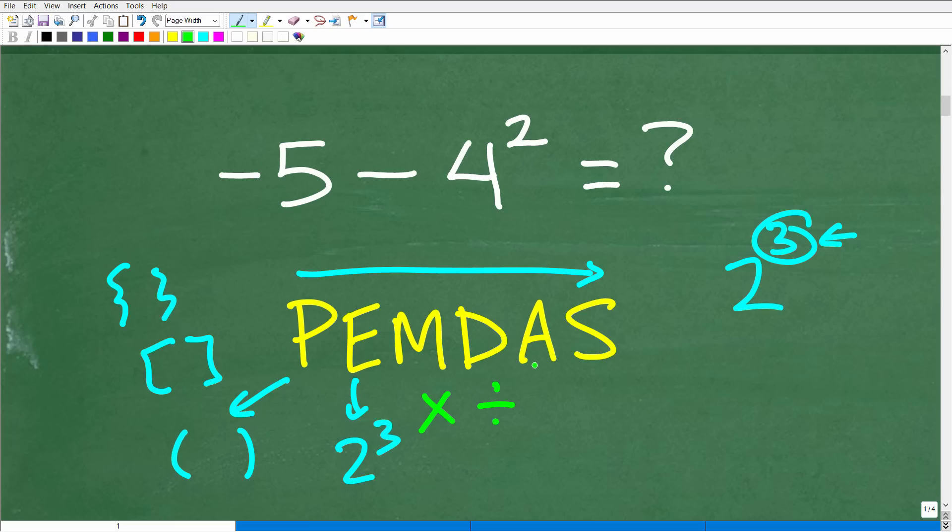M, D stands for multiplication and division. A is addition and S is subtraction. So a lot of students think, oh, I must do multiplication, then division, then addition and subtraction in this strict order. That's actually not the case. The M and D and A and S are groups.